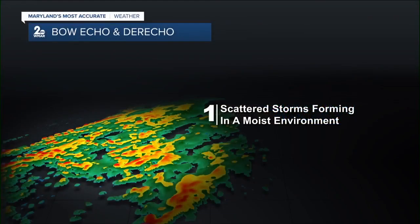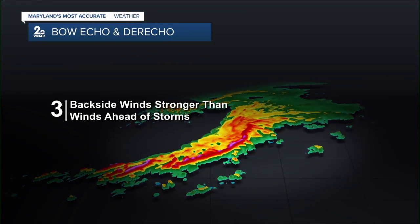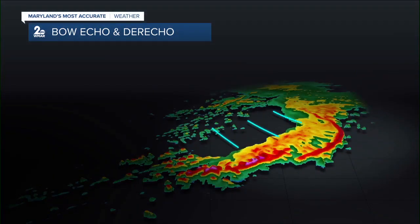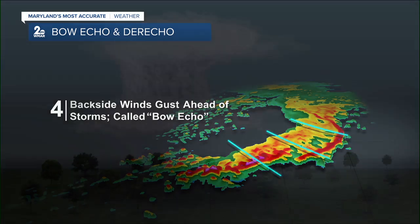Let's jump right into it, starting with our first slide. We want to talk about the environment here — scattered showers and thunderstorms developing in a very warm, humid, moist environment. They will continue to advance, and as they do, sometimes they become more linear, so you start to see a line of thunderstorms developing, and more often than not they're a severe warrant for their winds in excess of 58 miles per hour. The winds behind the storm get stronger than the winds ahead, and that's whenever you start to see a little bit of bending — what we call bowing out. That's what we call the bow echo, where it kind of looks like a crossbow, so it's not hard to see in this image where that bow echo is.